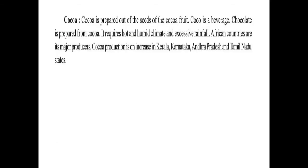Next is cocoa. Cocoa is prepared from the seeds of cocoa fruits and is a beverage. Chocolate is also prepared from cocoa. It requires hot and humid climate and excessive rainfall. African countries are its major producers. Cocoa production is on the increase in Kerala, Karnataka, Andhra Pradesh, and Tamil Nadu.